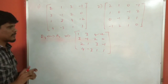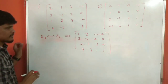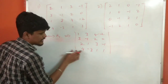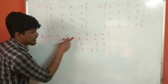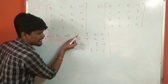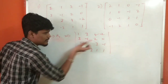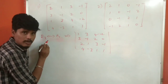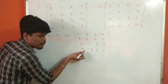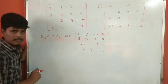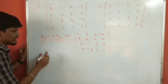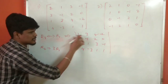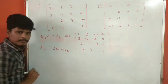We're going to change the matrix now. What do we do with Rho2? We apply: 3 into Rho1, then multiply minus Rho2.